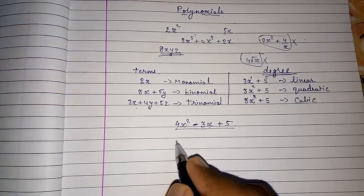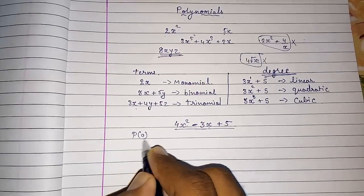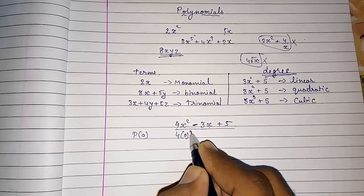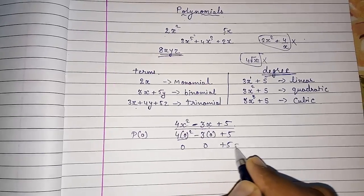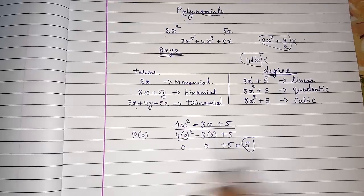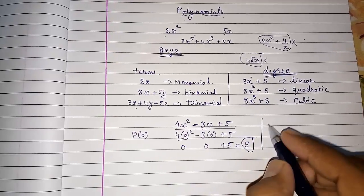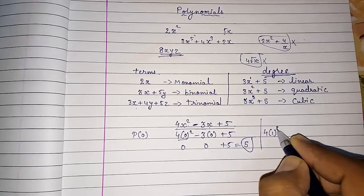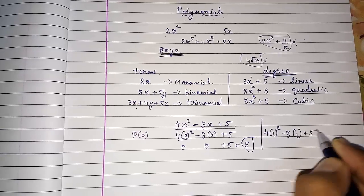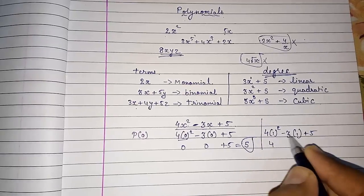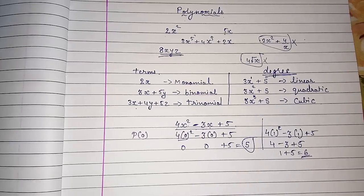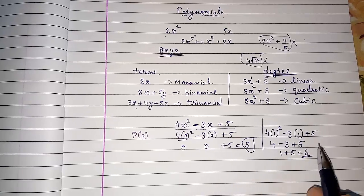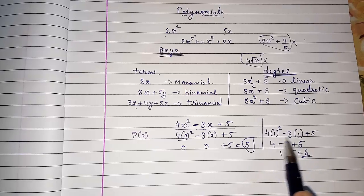For example, put x = 0: we get 4 times 0 squared minus 3 times 0 plus 5, which equals 5 — so 0 is not the zero. Now put x = 1: we get 4 times 1 squared minus 3 times 1 plus 5, which is 4 minus 3 plus 5 = 6 — so 1 is also not the zero. Sometimes a question will give you a number and ask you to check whether it is a zero — just substitute and verify.